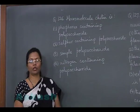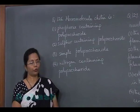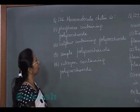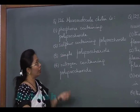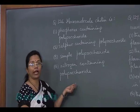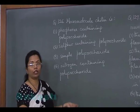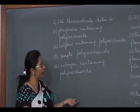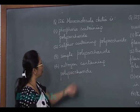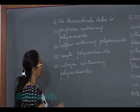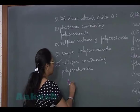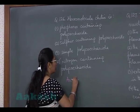Let's discuss question number 126. The macromolecule chitin is a polysaccharide which is N-acetyl glucosamine. There is an amine group, which means it's a nitrogen-containing polysaccharide. So our answer is option 4.